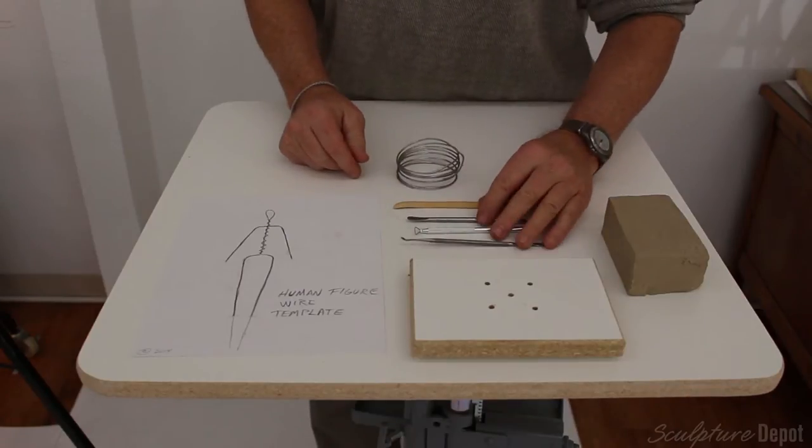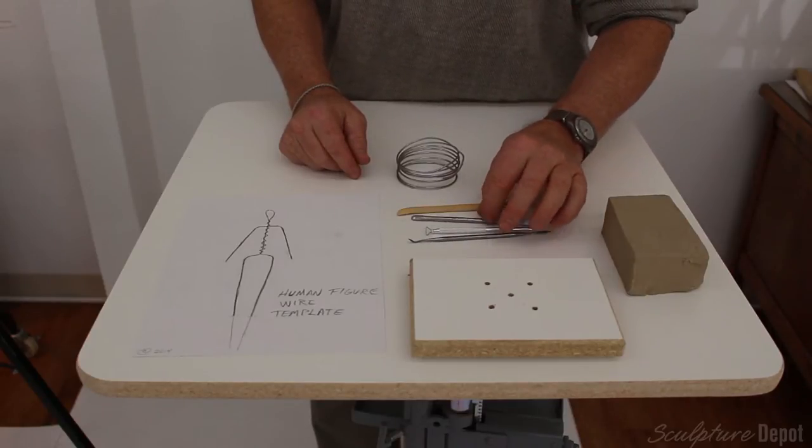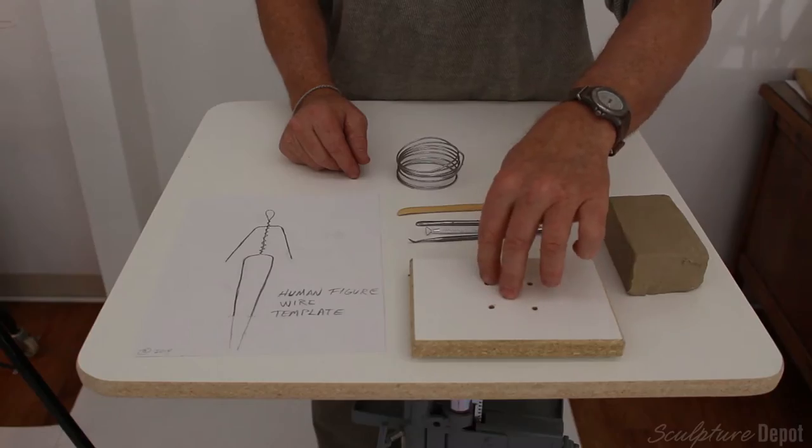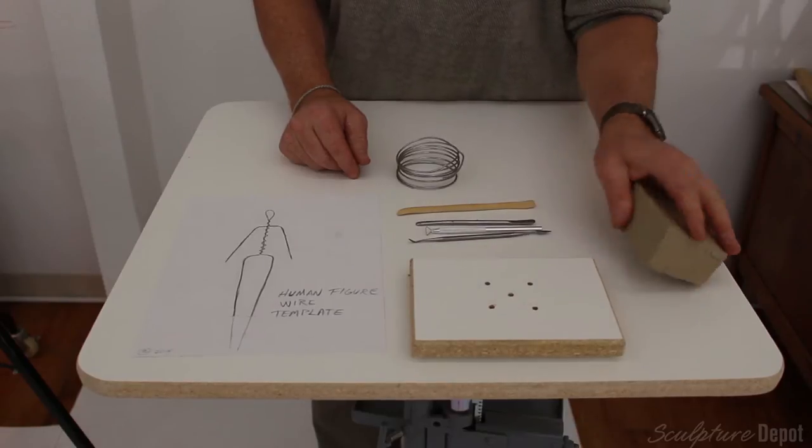You have an assortment of tools here, a wood tool and three metal tools that work well. You have a stand to mount your piece, to put the wires through these holes and mount your sculpture.